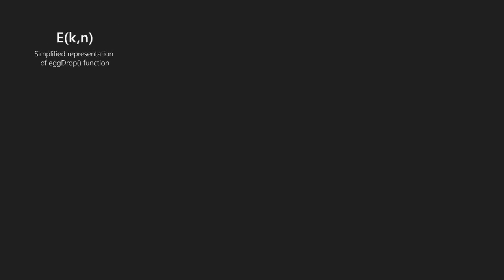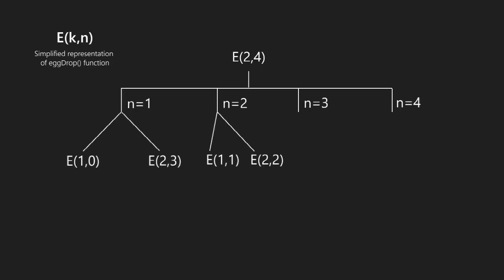For understanding, we simplify the representation to e(k, n) where k is number of eggs and n is number of floors — note the parameters are swapped. Taking the example of two eggs and four floors, there will be two cases for each of the four floors. For n=1 (the bottom floor), case one (egg breaks) gives one egg left and zero floors below. Case two (egg doesn't break) and so on, expanding the partial recursion tree further.